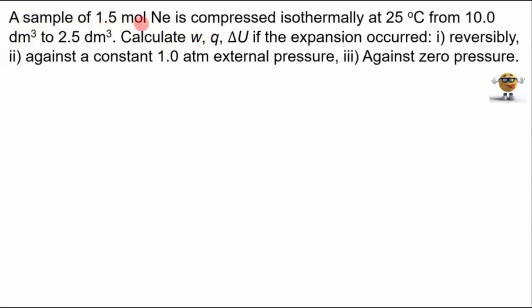A sample of 1.5 moles of neon is compressed isothermally at 25 degrees Celsius from 10.0 dm³ to 2.5 dm³. The question is asking us to calculate the work, the energy transferred as heat, and the change in internal energy if the expansion occurred in one of three ways: reversibly, against a constant 1.0 atm external pressure, and against zero pressure.